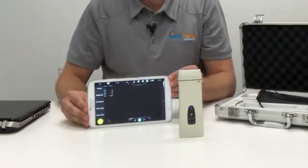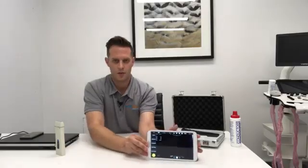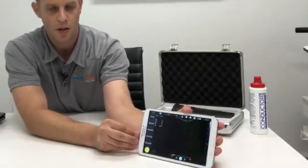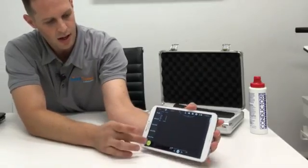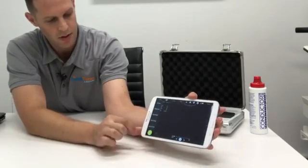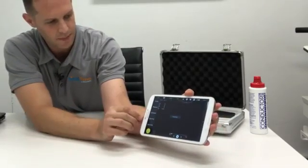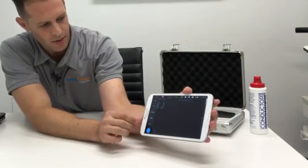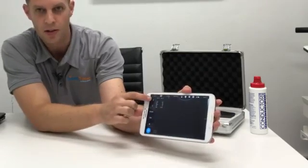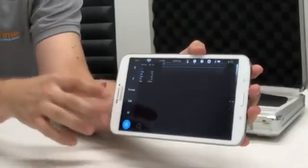We'll run through the software and give you a look at all the different features here. So if we take a close look at the software what you can actually see is that we've got a freeze button down the bottom. So I'll just press that so we're live imaging again and when you're live imaging what you'll have is all these buttons down the side: B, C, Power, Pulse Wave.